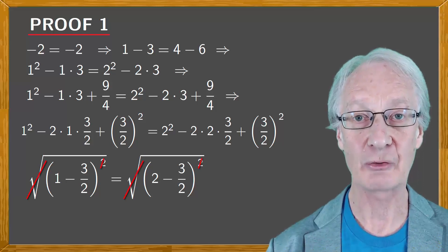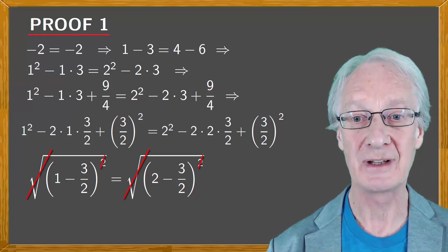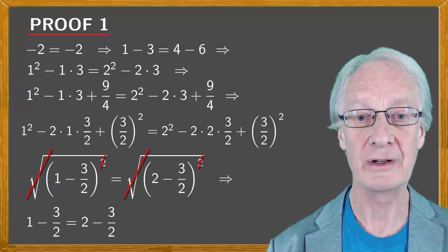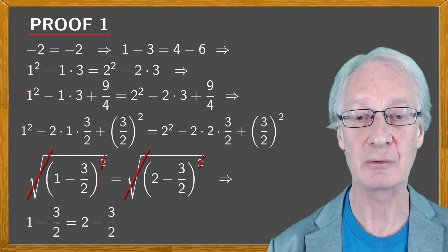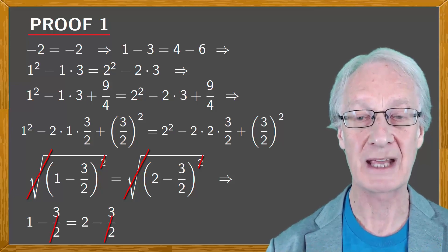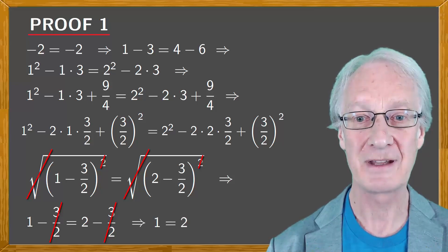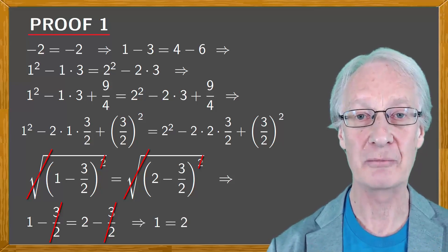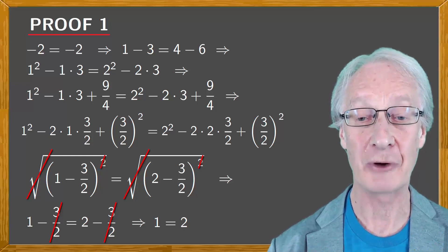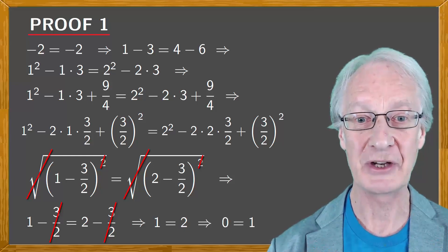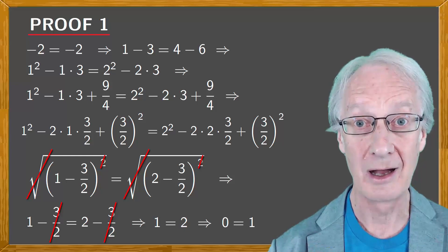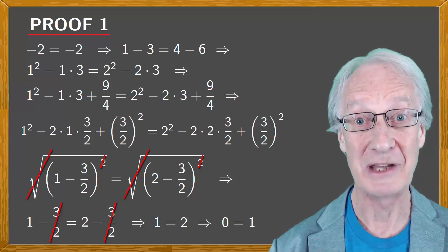The root and square cancel, giving us one minus three-over-two equals two minus three-over-two. The three-over-two cancels, giving us one equals two. Subtracting one from both sides, we arrive at zero equals one. Amazing.